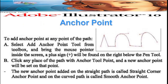Anchor point: to add an anchor point to any point of a path, select the Add Anchor Point tool from the toolbox. Bring the mouse pointer inside the screen — a plus sign will be found on the right below the pen tool. Click any place of the path and a new anchor point will be set at that point. A new anchor point added to a straight path is called a straight corner anchor point.